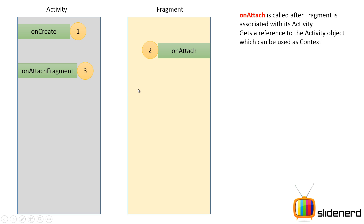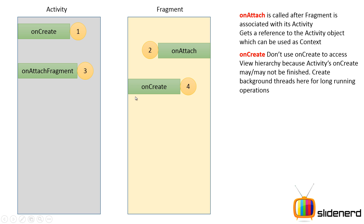The on attach fragment method is called on the activity to notify it that a fragment was recently attached. Then on create is called inside the fragment. The difference between the activity's on create and the fragment's on create is: inside the activity's on create you use set content view to link the appearance, whereas in the fragment's on create you should not access UI elements. The reason is the activity's on create may execute before or during the fragment's on create, so the view hierarchy may not yet be linked, giving you null objects and causing crashes. Instead, you can use on create in the fragment to initialize long-running operations.